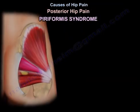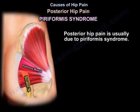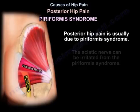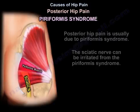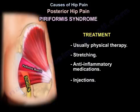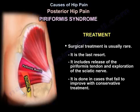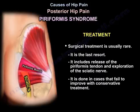Posterior hip pain is usually due to piriformis syndrome. The sciatic nerve can be irritated from piriformis syndrome. Treatment is usually physiotherapy, stretching, anti-inflammatory medications, and injections. Surgical treatment is usually a last resort, and includes release of the piriformis tendon and exploration of the sciatic nerve, done in cases that failed to improve with conservative treatment.